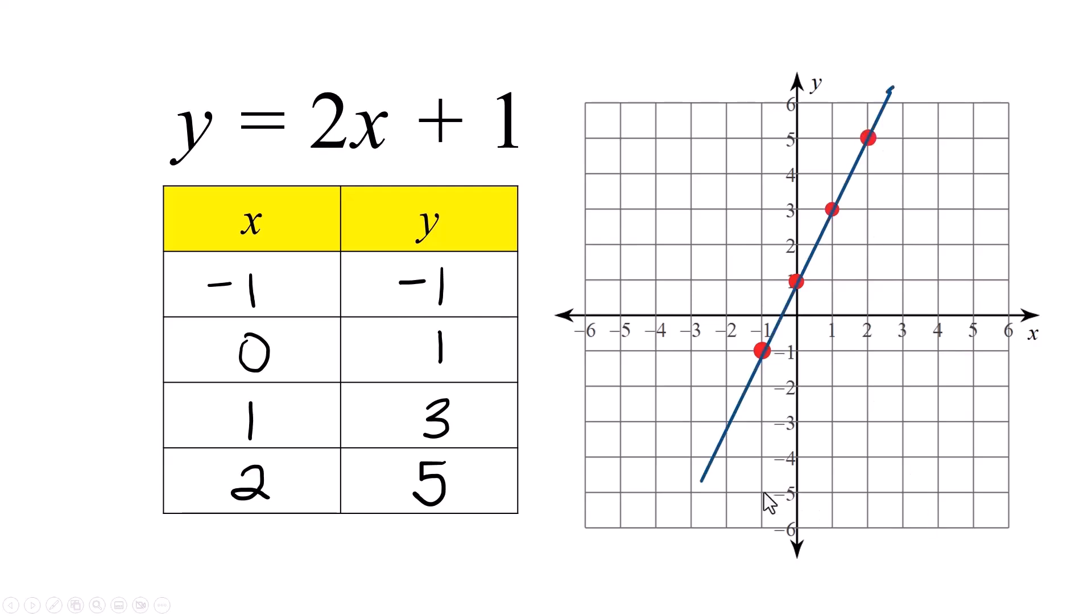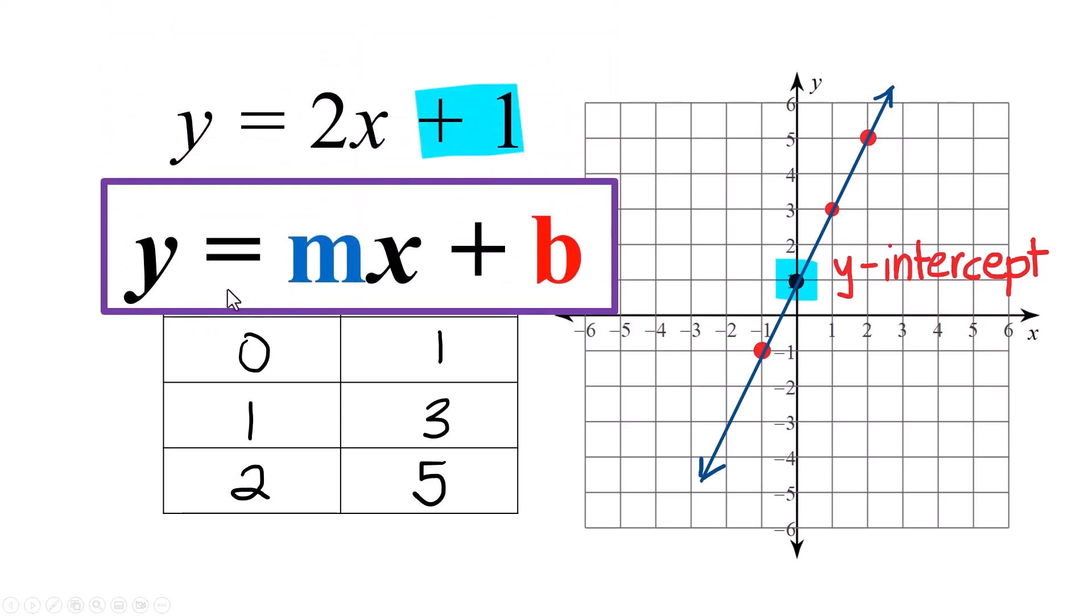The question is, where does that line cross the y-axis? That's called your y-intercept. It's right here. That's the y-intercept. The value of that number is plus 1. And plus 1 shows up in your equation here. So what you've got, for this one anyway, is that the slope is in front of the x and the constant is this y-intercept number.